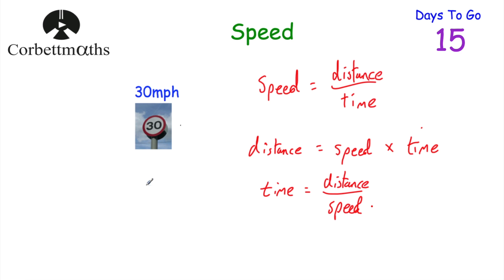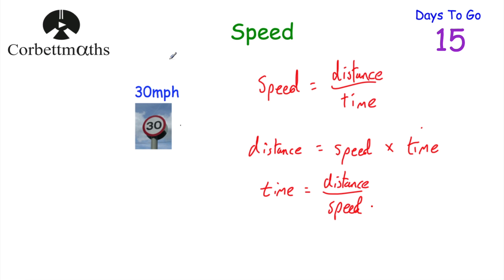Now if we've got a speed such as 30 miles per hour, it tells us a lot of information. It's saying that every single hour something is travelling 30 miles. So in one hour it would travel 30 miles, in two hours it would travel 60 miles, in three hours it would travel 90 miles, and so on.